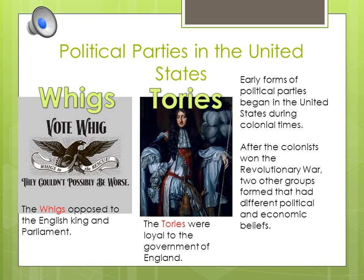Early forms of political parties began in the United States during colonial times. There was a group called the Whigs, and they opposed the English king in parliament, fighting for more independence from the king. Then there was another group called the Tories, and they were loyal to the government of England, supporting the monarchy and the rule of Britain.